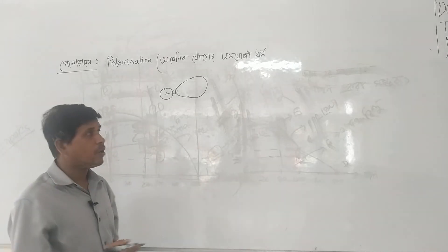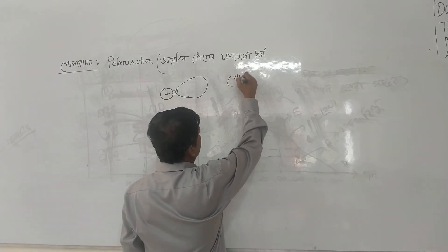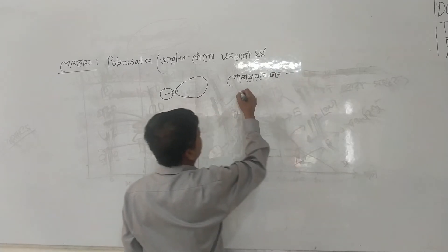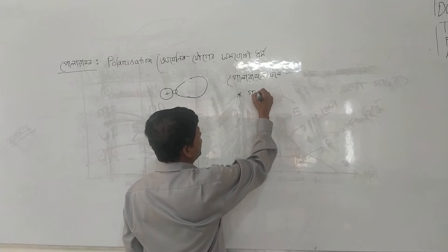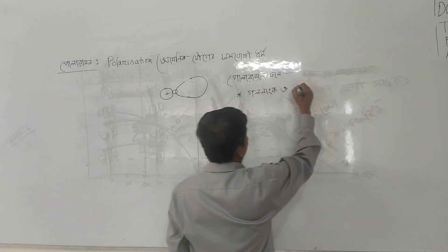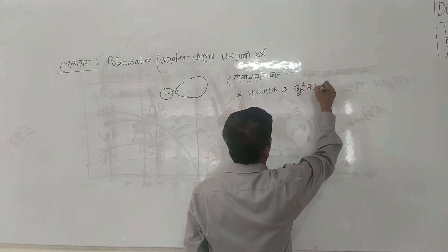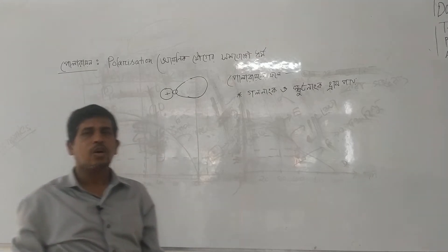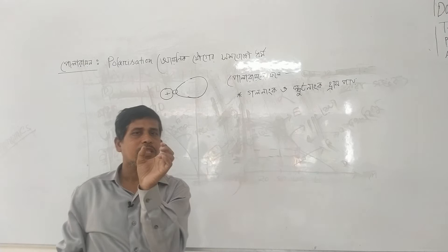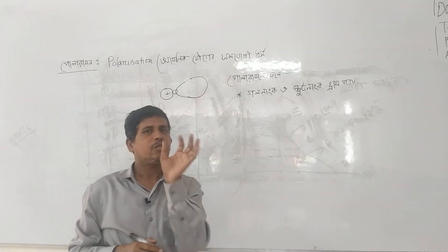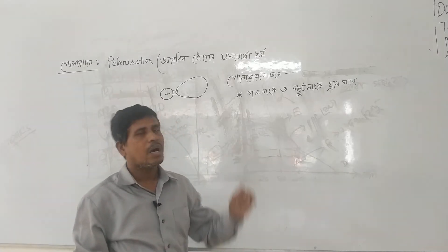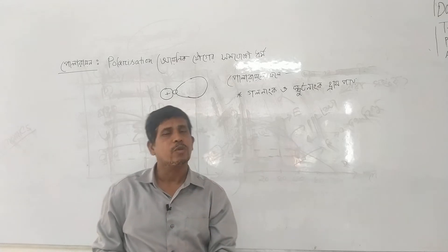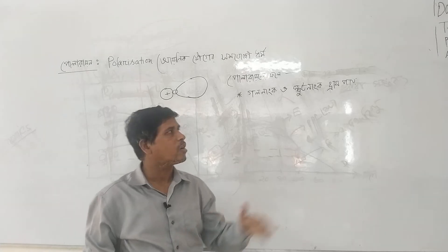Now let us discuss the effects of polarization. Polarization affects the properties of the ionic compound, including the melting point and boiling point. When polarization occurs, the melting point and boiling point decrease.